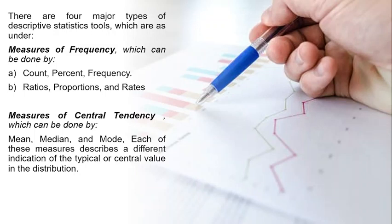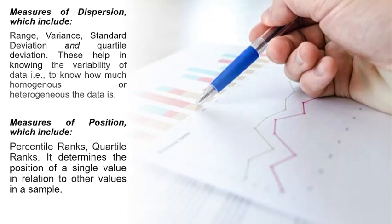The second tool, which is most commonly used, is the central tendency. The central tendency can be known by taking a mean, median, or mode. Each of these measures describes a different indication of the typical or central value in the distribution.